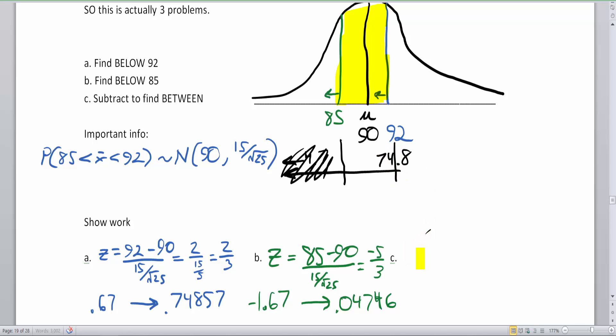So that's my part C, is to do the 0.74857 minus the 0.04746. And that gives me an answer 0.70111. And that is going to then be my answer of 70.1% chance to be between the 85 and the 92. So this here represents 70.1% of the entire data, or your population in this case. So it's very highly likely that if you're going to get 25 people, and their average will be in that range between 85 and 92, given that the true average is 90.